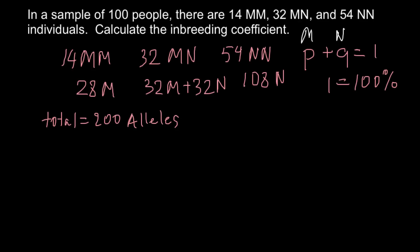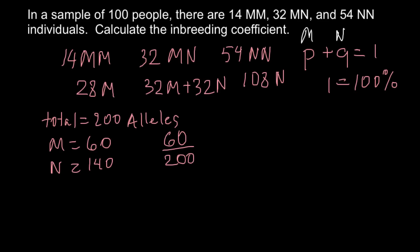Now we calculate how many M and N alleles we have. We have 28 alleles M from MM individuals plus 32 alleles M from MN individuals, giving 60 alleles M total. That means we have 140 alleles N. To find the frequency of allele M, we divide 60 by 200, which gives 0.3.